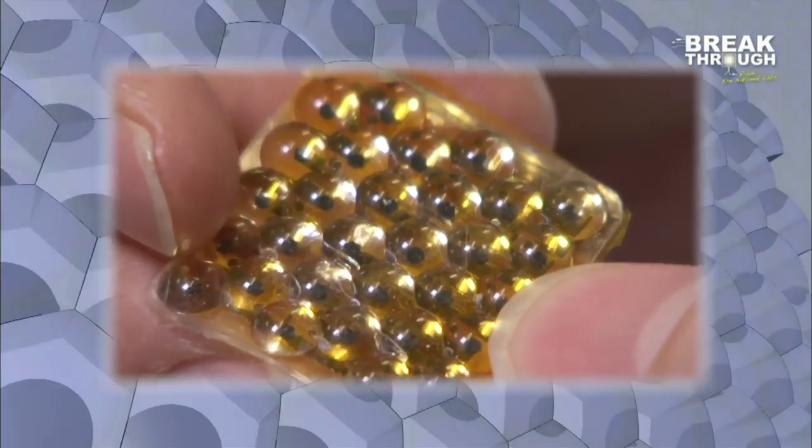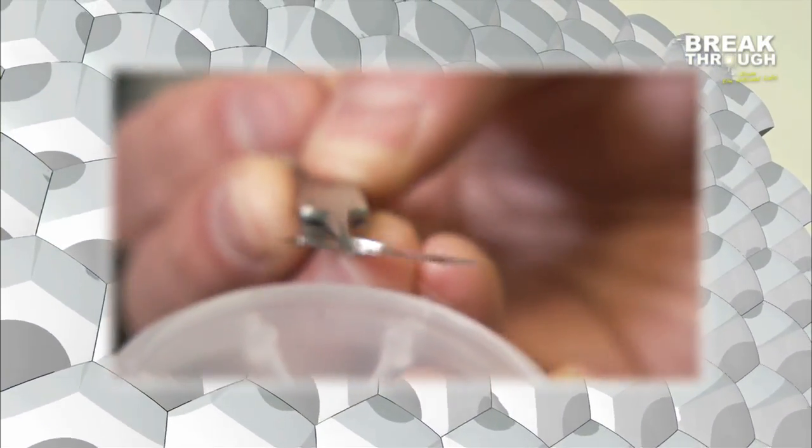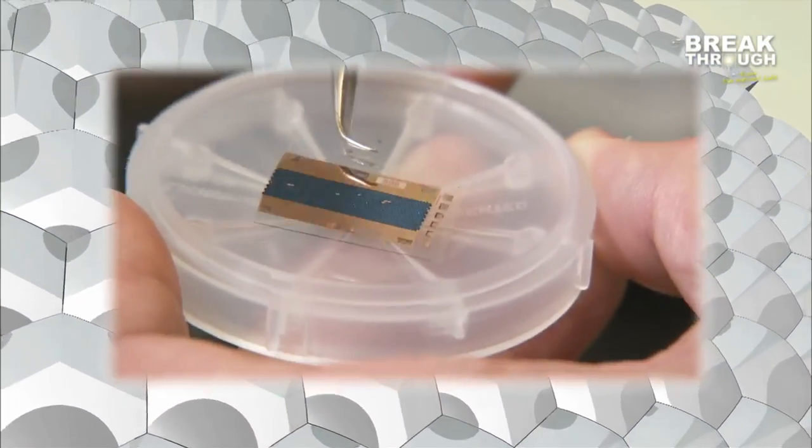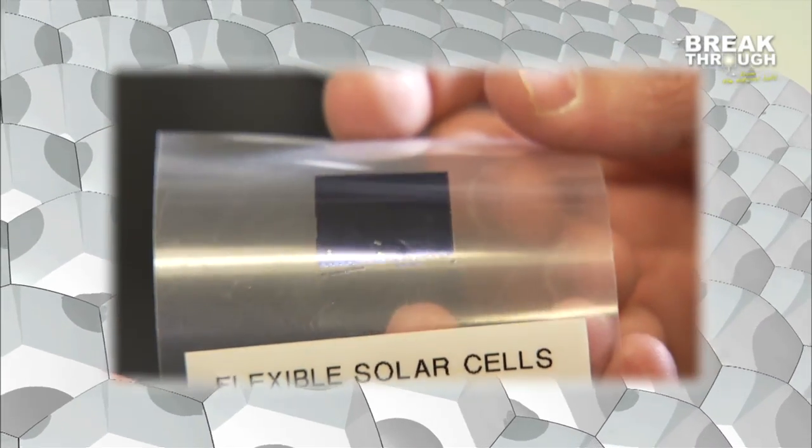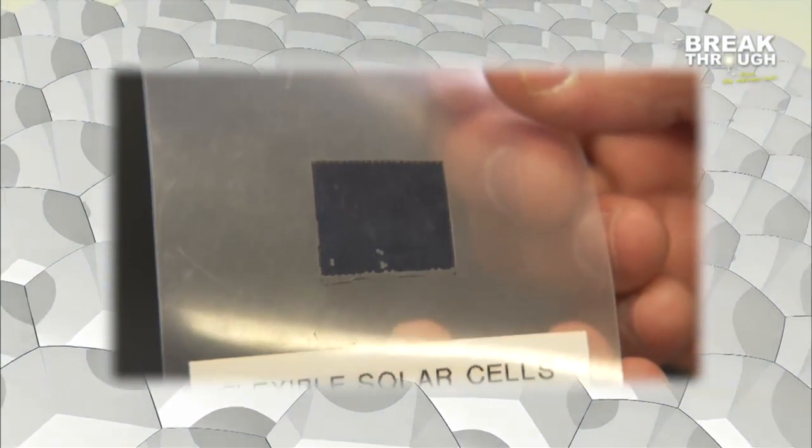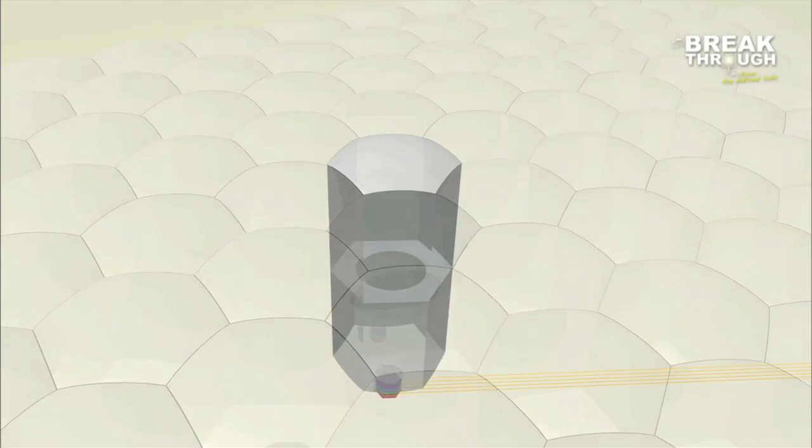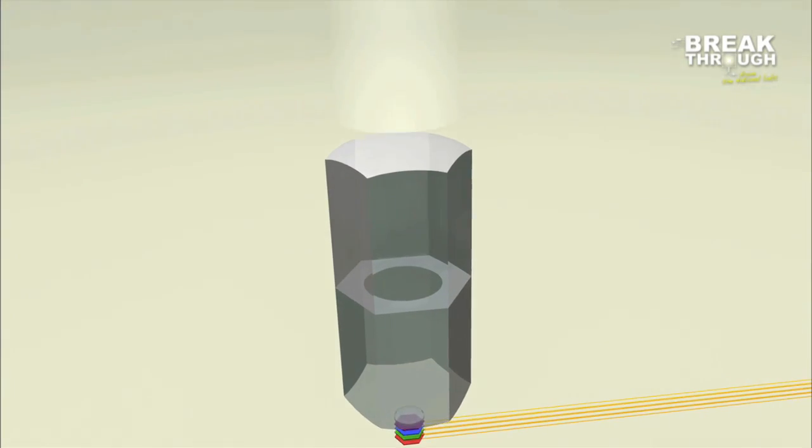Microsystems-enabled photovoltaics, or MEPV, allows high-performance concentrated photovoltaic technology to be incorporated into thin, lightweight modules that can be mounted on low-cost sun trackers.